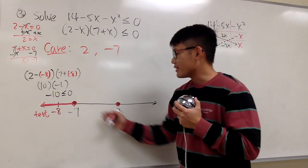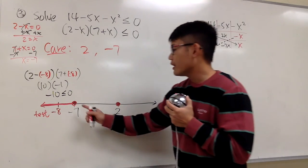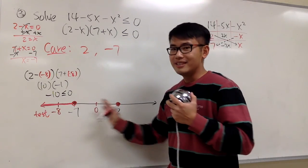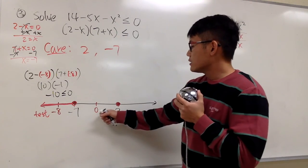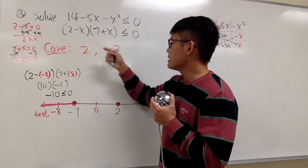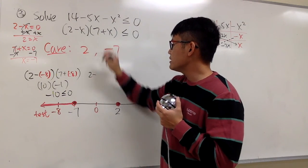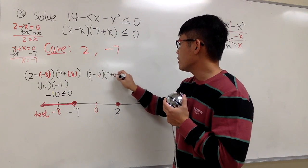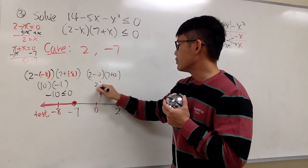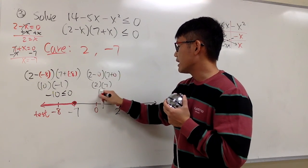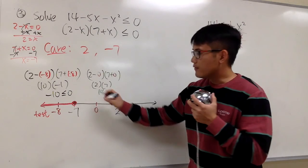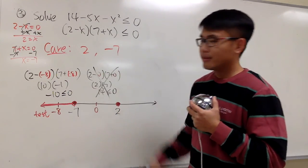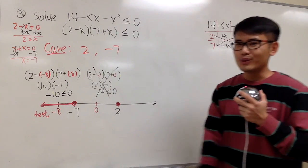For the second interval, let's pick a number between negative 7 and 2 — we can use 0. Plug in 0: we have (2 minus 0) times (7 plus 0), which is just 2 times 7, and that's 14. Is 14 less than or equal to 0? No, it's not. That means we leave this interval — we don't include it in our answer.